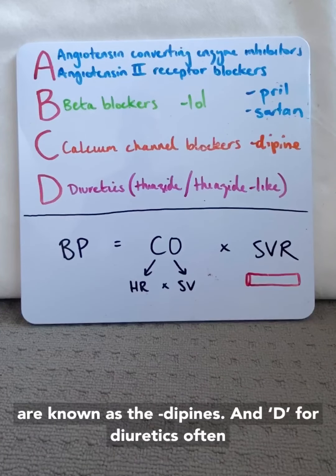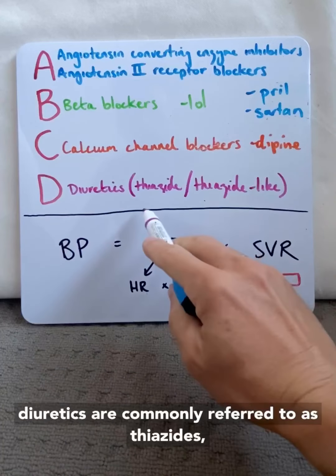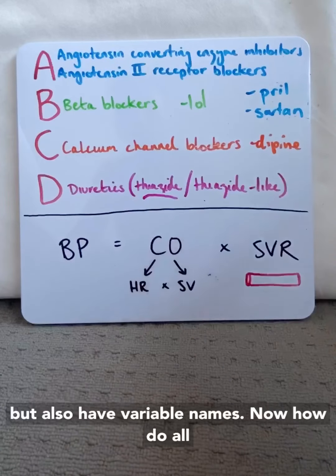And D for diuretics, often known as the thiazide or thiazide-like diuretics, are commonly just referred to as thiazides, but also have variable names.